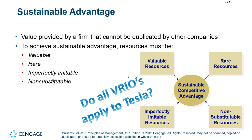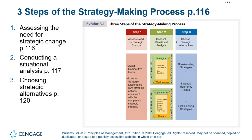Next we look at the three steps of the strategy-making process, starting on page 116. Step one is to assess the need for strategic change — you want to avoid competitive inertia and look at strategic dissonance. Step two, on page 117, is the situational analysis, which involves environmental scanning. Step three, on page 120, is choosing your strategic alternative once you've assessed and conducted your analysis.